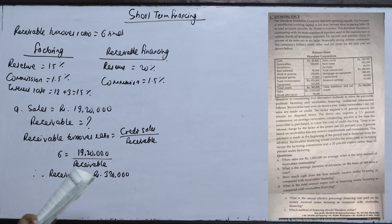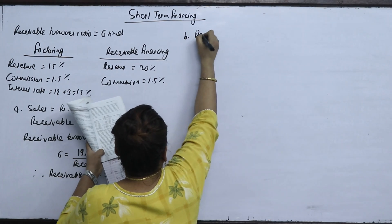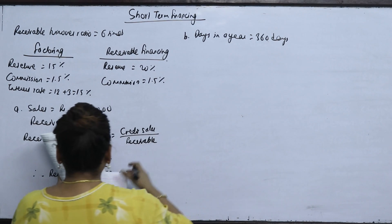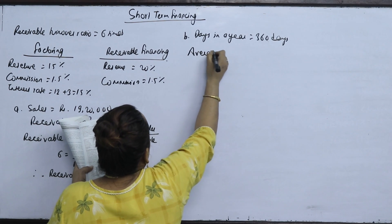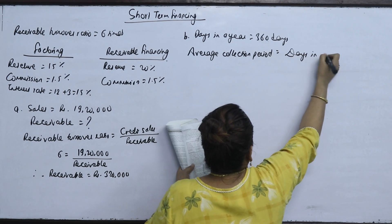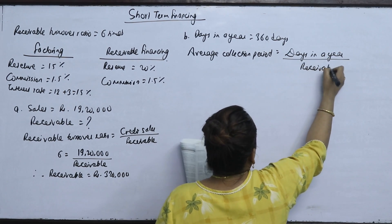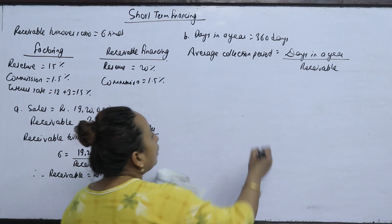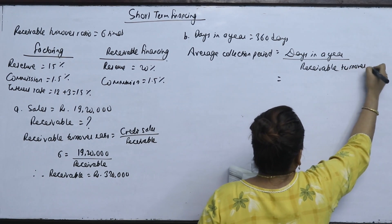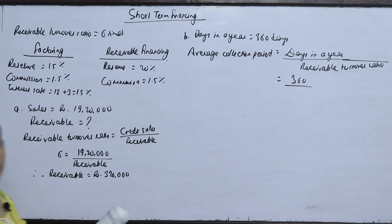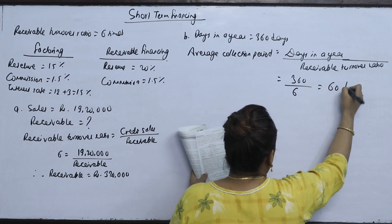The average duration of advance, on the basis of 360 days per year: the turnover ratio is 6 times, so we divide 360 by 6 to get 60 days.